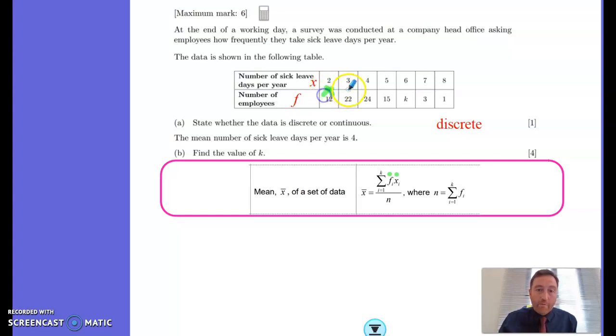So in this case, we're going to be doing frequencies times the values. That's 12 times 2, 22 times 3, 24 times 4. That's adding up all the frequencies times the values. Then we're going to divide it by all of these frequencies added together. Now we've got this value k in here, so this isn't quite as straightforward as it could be.